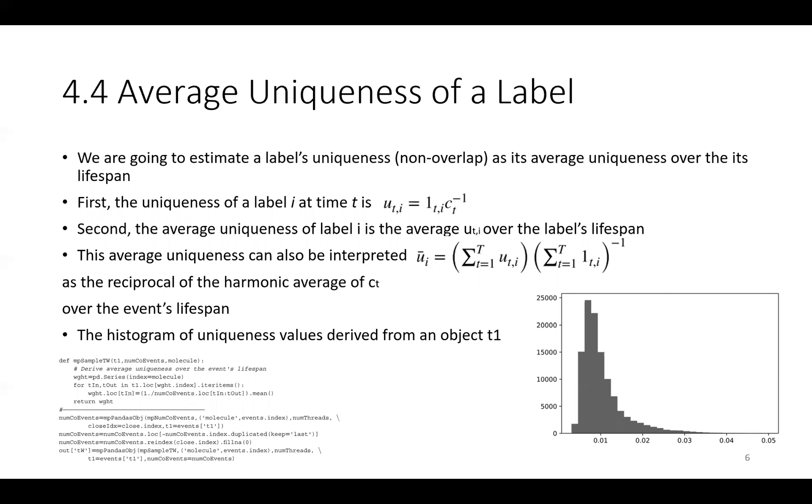This average uniqueness can also be interpreted as a reciprocal of the harmonic average of c_t over the event's lifespan. The histogram of uniqueness follows derived from an object T1 is presented on this slide, as well with the code.